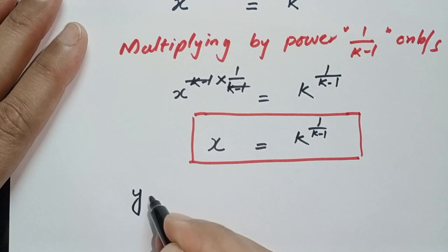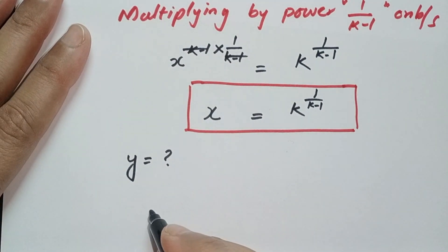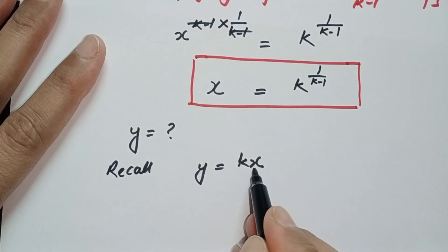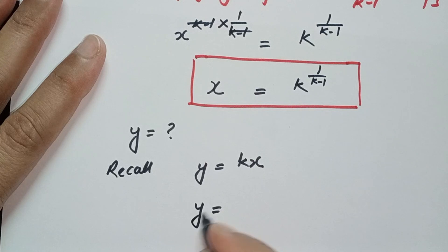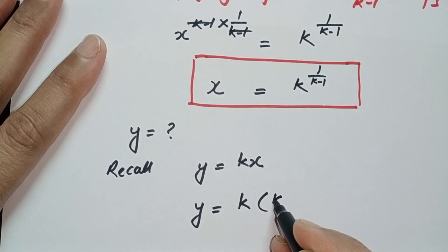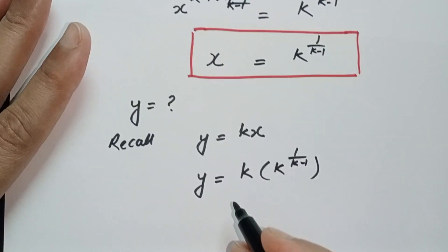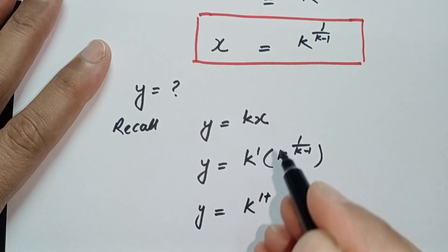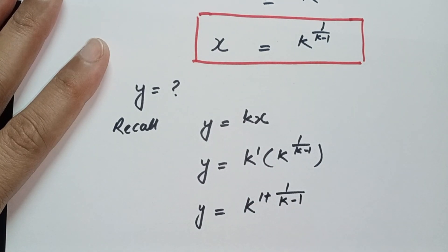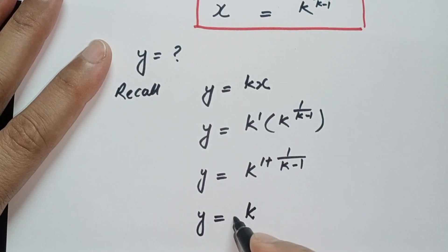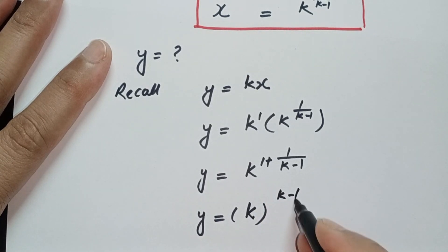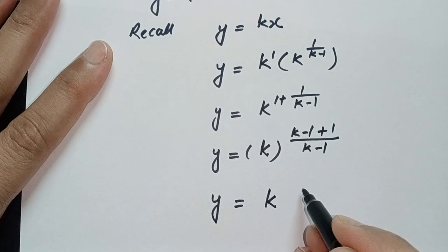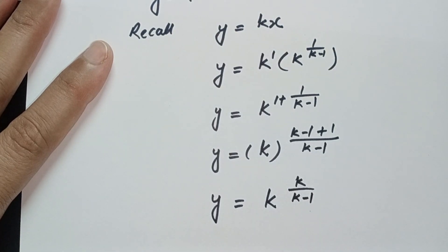To find y, we recall that y is equal to kx. We plug in the value of x: y is equal to k times k to the power 1 over k minus 1, which gives y equal to k to the power 1 plus 1 over k minus 1. Simplifying, we get y is equal to k to the power k over k minus 1.